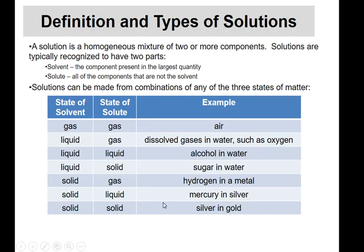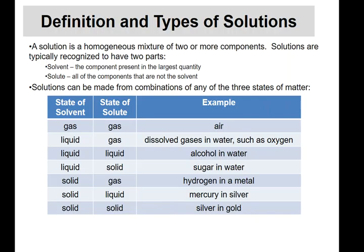And solid-and-solid: you have a solid solvent and a solid solute. For example, if I take silver and gold — put a little bit of silver into gold — then gold is my solvent and silver is my solute. So there's quite a range of solution types you can have.